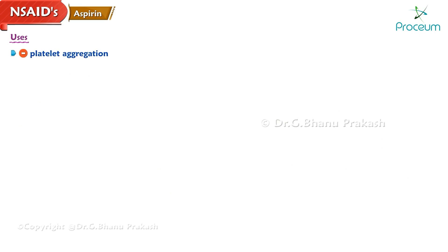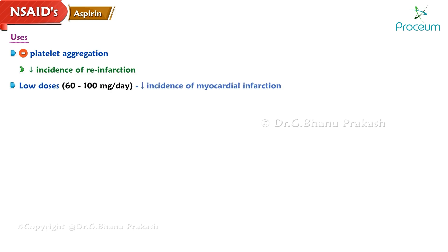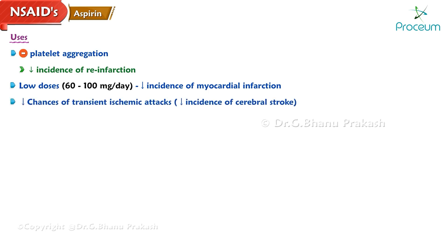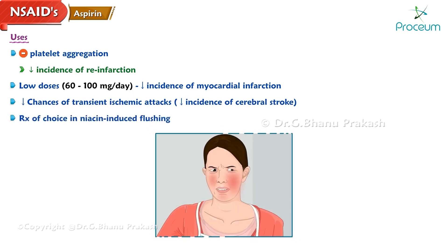Inhibition of platelet aggregation lowers the incidence of reinfarction in patients with post-myocardial infarction. Low doses of 60 to 100 milligrams per day significantly reduce the incidence of myocardial infarction. It also decreases the chances of transient ischemic attacks, hence decreasing the incidence of cerebral stroke. It is the treatment of choice for niacin-induced flushing.